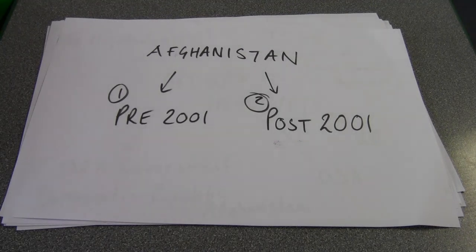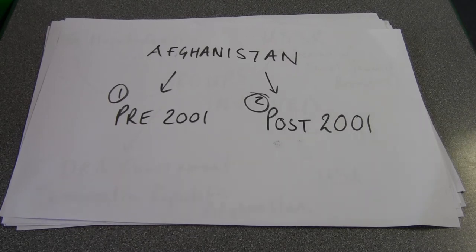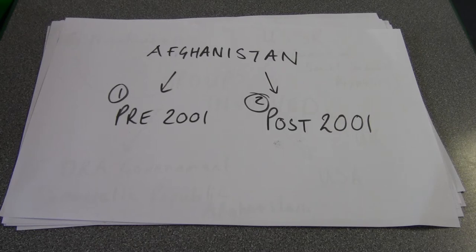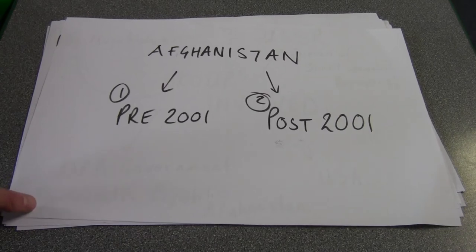The next major conflict we're going to look at is in Afghanistan. I've split it into two sections because we need to look at it in two different parts — pre-2001 and post-2001. For those not sure what happened in 2001, we've got the attacks on the Twin Towers, the World Trade Center, on 9/11. It's really important for us studying geopolitics and geography to understand the history behind these conflicts.